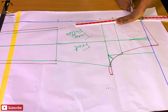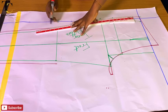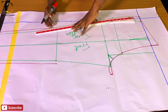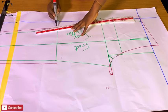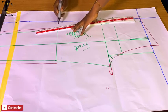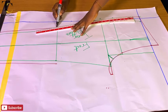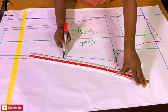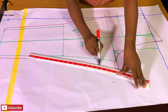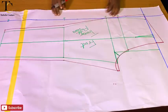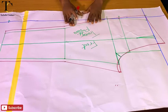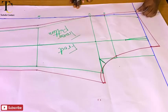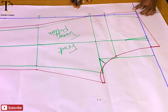I'll use my trouser curve to connect from the waist to the crotch, then from the crotch to the knee for the back trouser. At the other side I will connect from the crotch extension to the knee. I'm almost done.